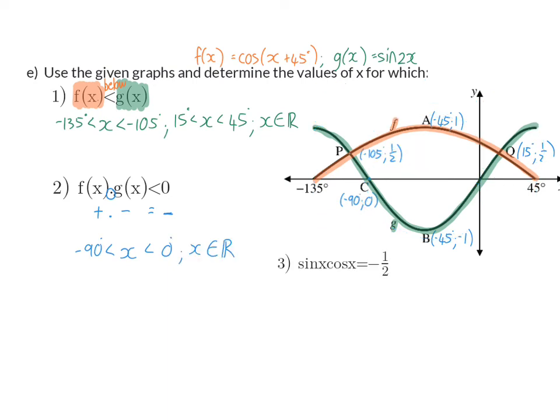Question three. Determine the values of x, for which sin x times cos x is minus a half. Here, we need to realize that we have a sin and a cos graph, but not a graph for sin times cos. So, now we'll have to do a bit of manipulation to get something that is on our graph.